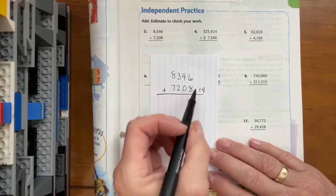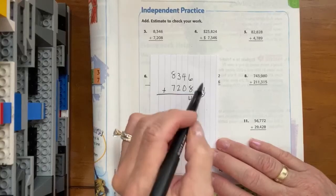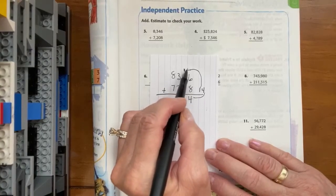Again, I'm going to write it here so that I can see that my ones go below the line under the ones and my tens go all the way up to the tens column.